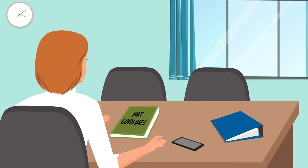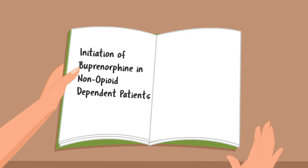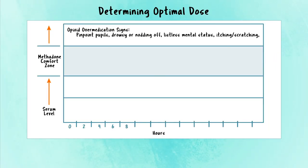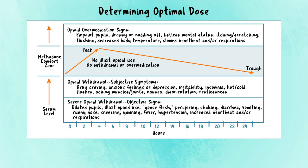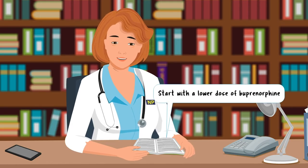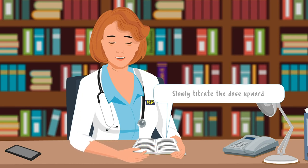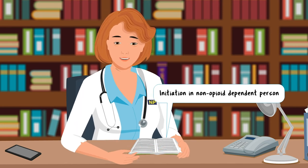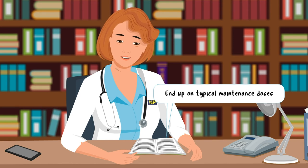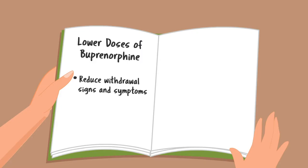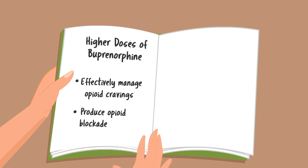What are the special considerations for patients who are not currently opioid dependent, and which of these patients are good candidates to initiate buprenorphine treatment? Healthcare providers need to start with a lower dose of buprenorphine and slowly titrate the dose upward to manage the symptoms of cravings and to block the effects of other opioids. Patients initiating buprenorphine who are non-opioid dependent will often end up on similar maintenance doses as their opioid-dependent counterparts.